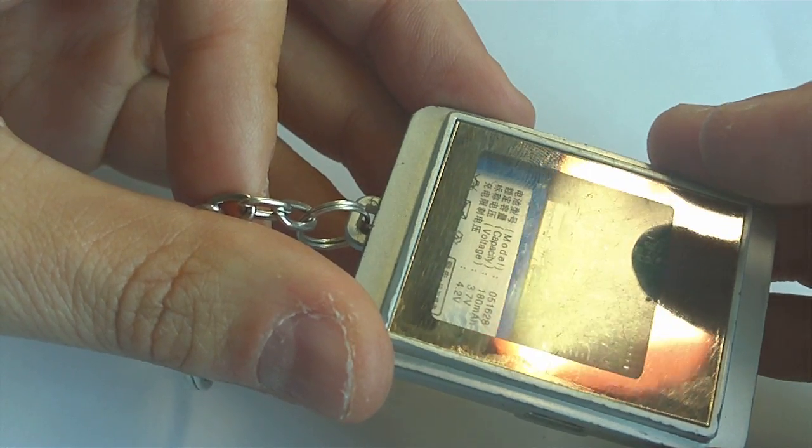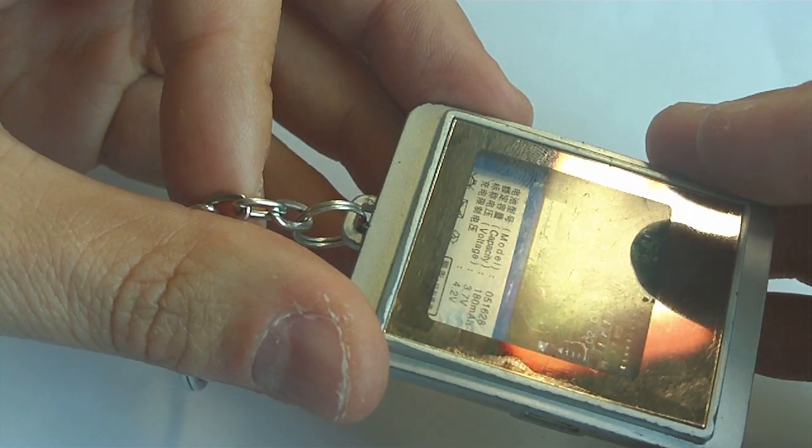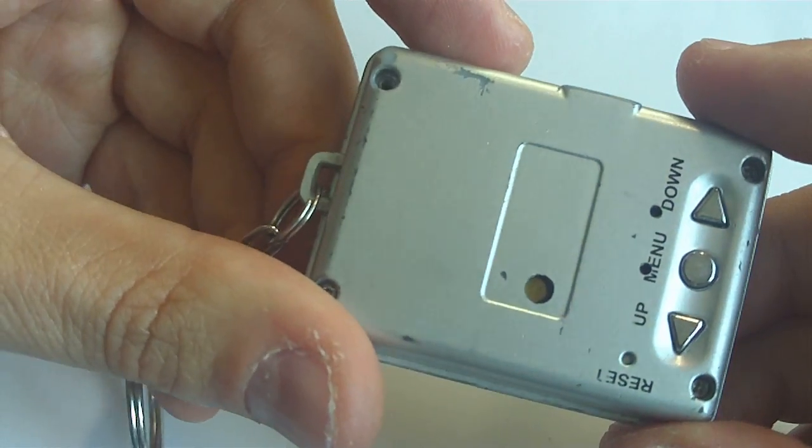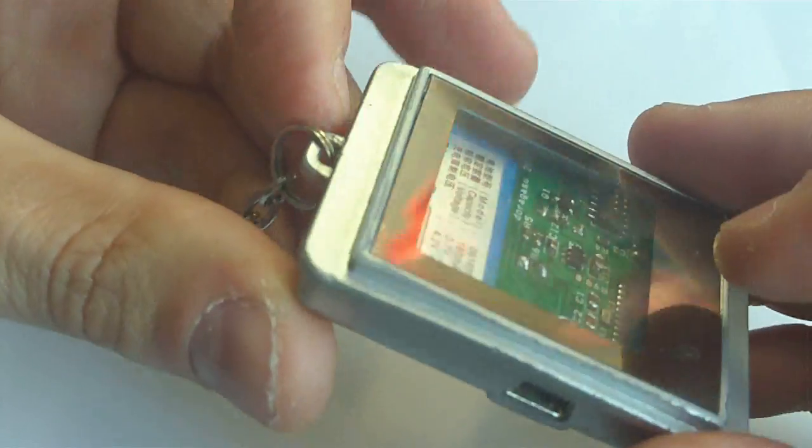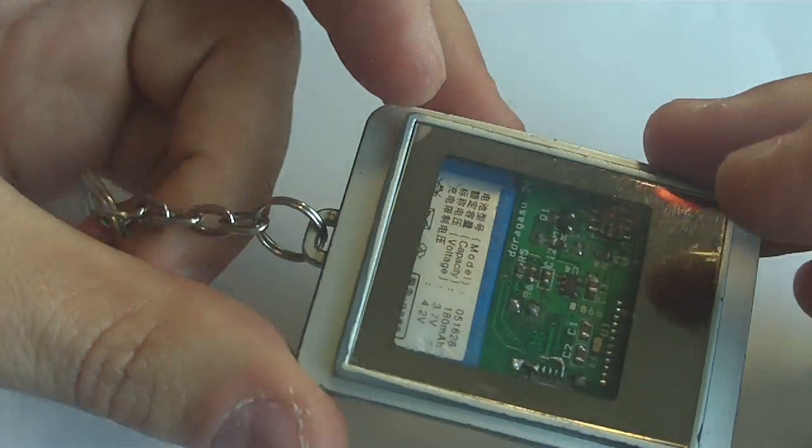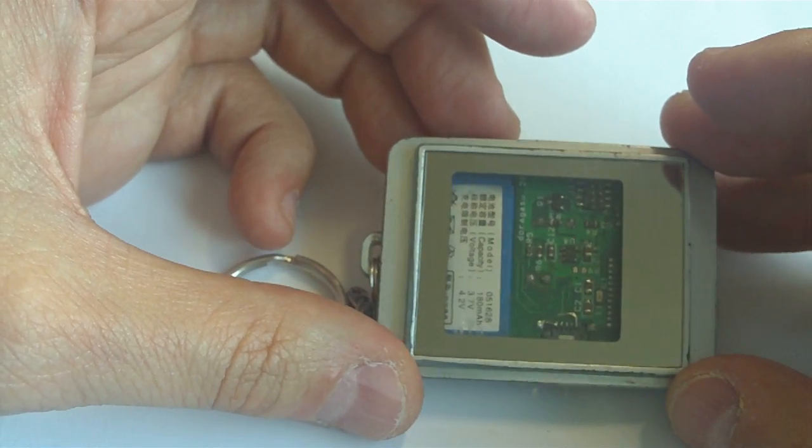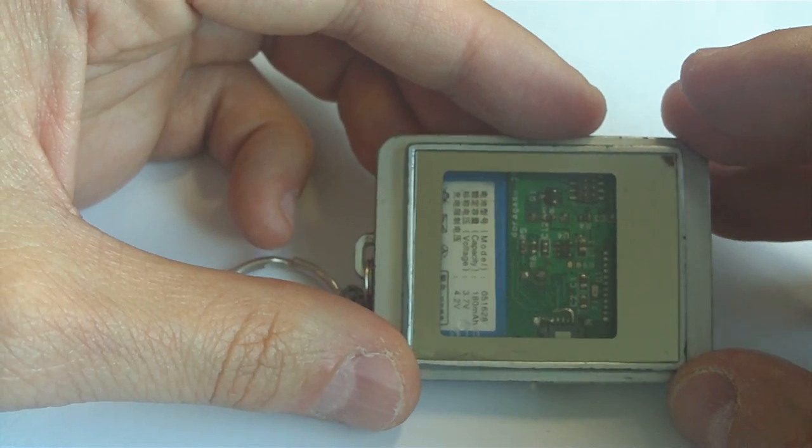Maybe using a low energy Bluetooth 4.0 chip and some kind of energy harvesting? Maybe it will work. But I think getting a new wife will be easier. Okay, that's all. Thanks for watching and happy hacking!